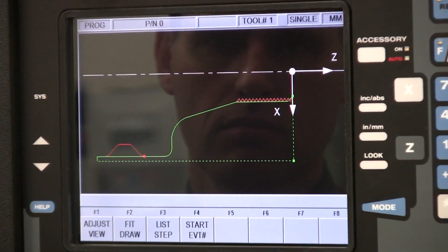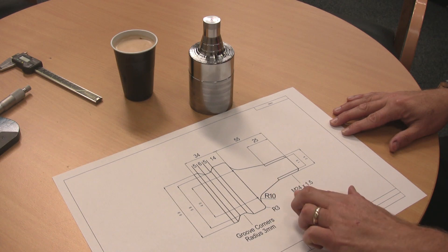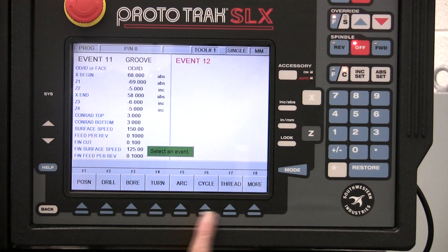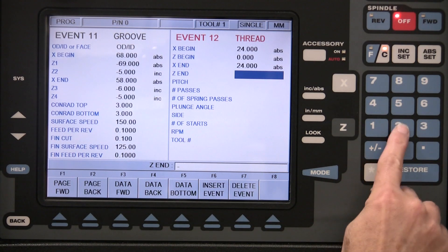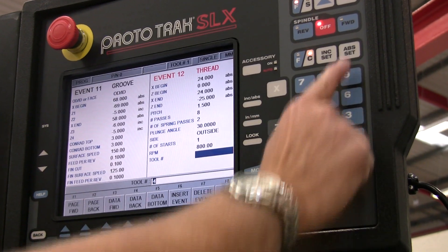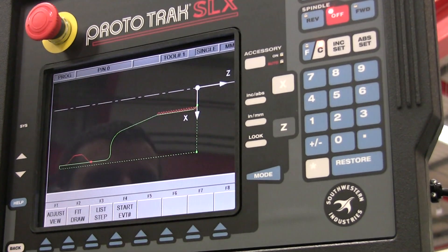You select the task, it then asks you the question and you input the value, in this case a thread. Just select the thread event, enter the start and end position of the thread, enter the pitch, passes, RPM and that's it, good to go.